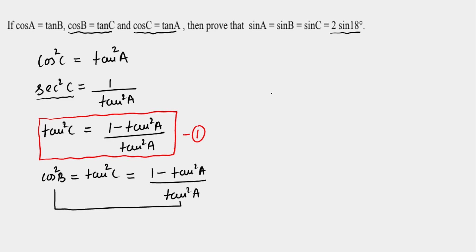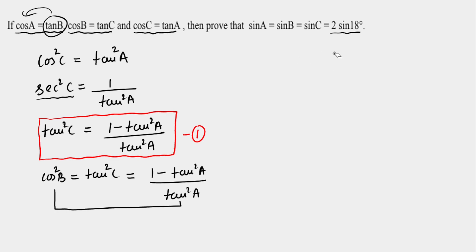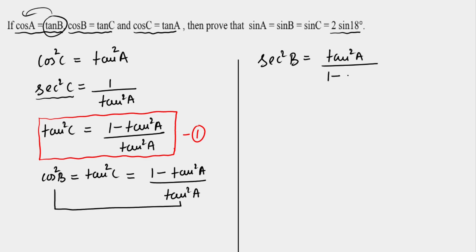I'll explain what I'm trying to do here. I got tan C in terms of tan A. Similarly, I'm going to convert tan B in terms of tan A. Once I have that, I can use the first equation to get everything in terms of tan A and solve for its value. So taking the reciprocal, sec²B = tan²A / (1 - tan²A).